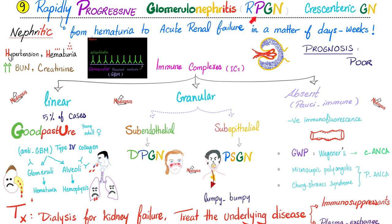Rapidly progressive glomerulonephritis — crescent formation. From drops of blood in the urine to complete kidney failure in a matter of days. BUN and creatinine are off the charts. We classify RPGN by immune complexes. If deposits are linear, it's Goodpasture. If granular and subendothelial, it's diffuse proliferative — patient usually has lupus. If sub-epithelial, it's post-streptococcal — a child with pharyngitis or skin infection about two weeks earlier. If there are no immune complexes, it's one of the vasculitides.